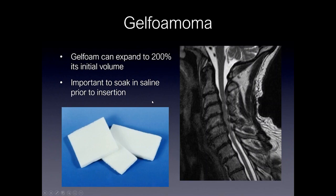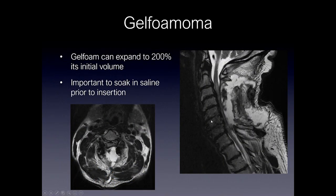Gelfoamoma is a term used for gel foam resulting in significant mass effect on the spinal canal after surgery. Gel foam is a hemostatic agent used to control bleeding, but it can expand to 200% of its initial volume. Typically, surgeons soak it in saline for several minutes prior to insertion; however, you can still get significant enlargement after placement. On the T2-weighted image, you can see a hyper-intense structure causing severe mass effect upon the spinal cord and severe canal stenosis — this turned out to be gel foam that was placed. The patient went back to the OR and it was removed. The differential also includes hematoma and postoperative fluid collection.